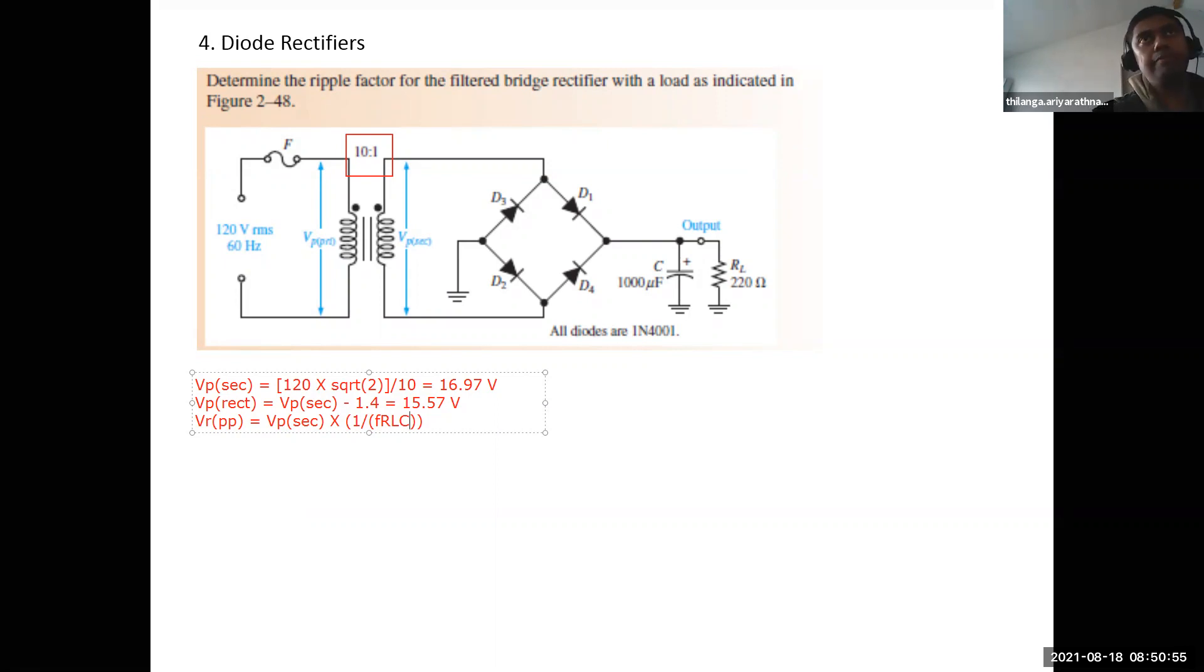If I will see, one over multiplied by VP rectified. OK, sorry, so this should be VP rect. OK guys. Now, when you substitute these values, that mean guys, fifteen point five seven multiplied by if I will see, one by within bracket, what is the frequency guys? For utility power supply to sixty. What will be the frequency of full wave rectification?